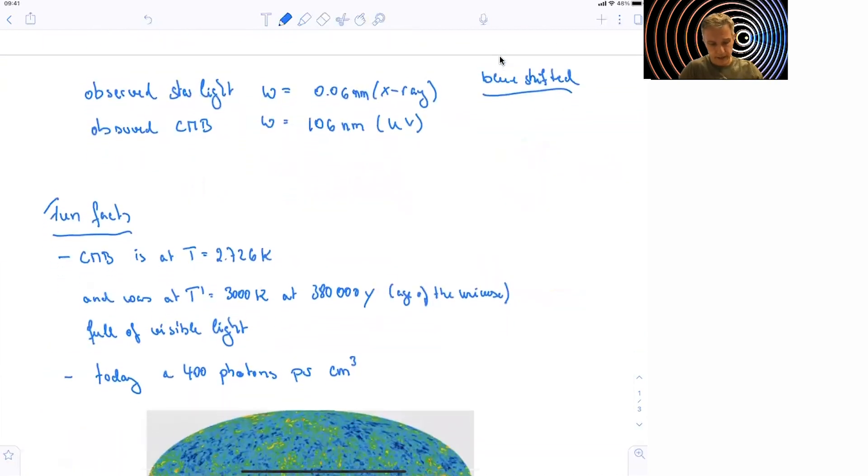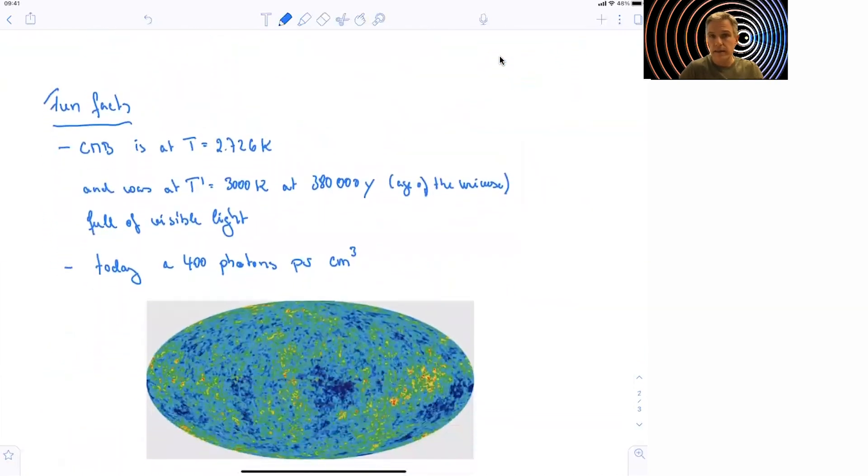A few more fun facts about the cosmic microwave background. It's actually at a temperature. So the spectrum of cosmic microwave background, those photons, they correspond to a spectrum emitted, which corresponds to a specific temperature of 2.7 Kelvin. That is the temperature of our universe. This temperature was about 3,000 Kelvin about 380,000 years after the Big Bang, the age of the universe at the time. And then at that time, this corresponds to visible light.